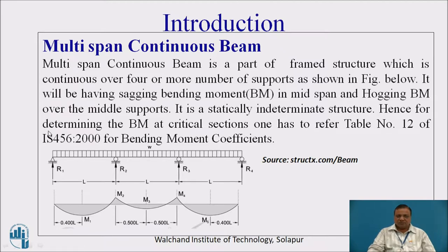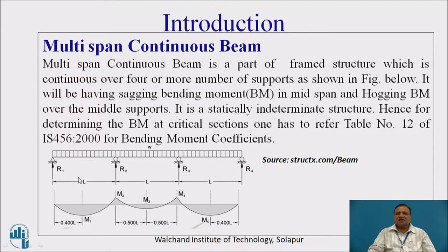Introduction: Multi-span continuous beam. A multi-span continuous beam is a part of a framed structure which is continuous over 4 or more number of supports, as shown in figure. Here there are 4 number of supports, whereas it can be even more — 5, 6, anything. So 4 or more number of supports are required.